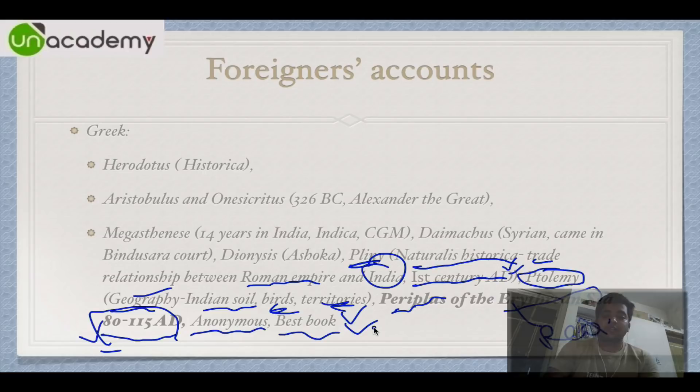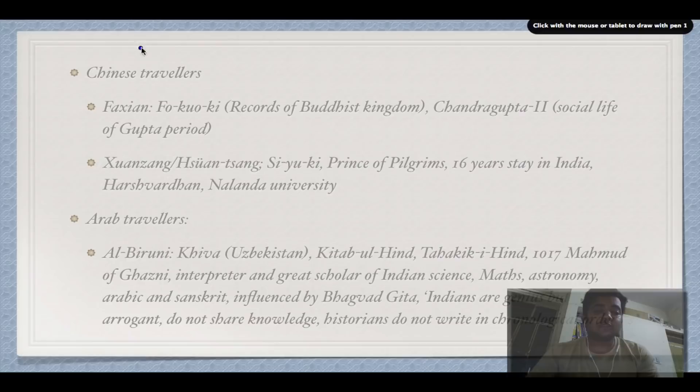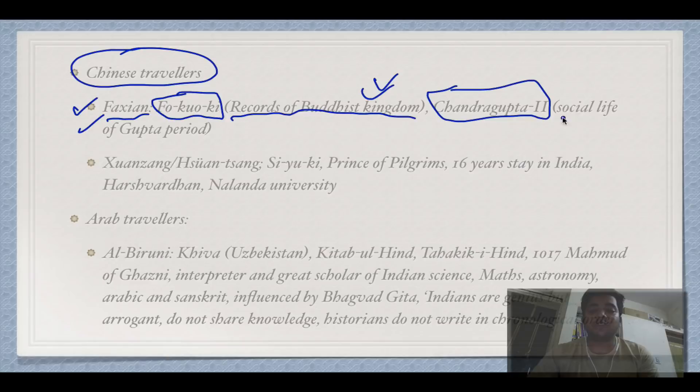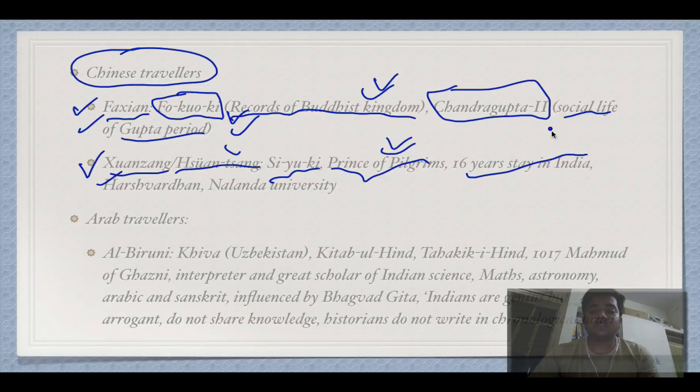Two famous Chinese travelers: Fa-Hien wrote a book called Fo-Kuo-Chi, meaning 'Records of Buddhist Kingdoms'. He came during the time of Chandragupta II and talks about the social life of the Gupta period. Xuanzang — also called Hiuen Tsang — wrote Si-Yu-Ki. He is called the 'Prince of Pilgrims', stayed 16 years in India, and came during the time of Harshavardhan in the sixth to seventh century AD.